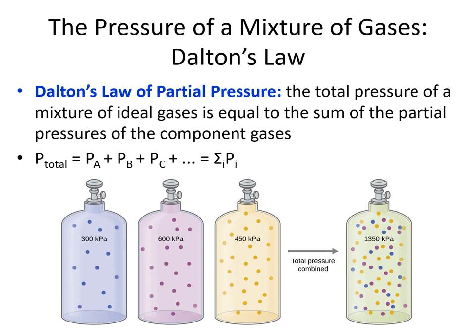So far we've been talking about just one gas at a time. When we have a mixture of gases, we can use Dalton's law of partial pressures, which tells us that the total pressure of a mixture of ideal gases equals the sum of the partial pressures of the component gases: P_total = P_A + P_B + P_C + ... For example, if we combined canisters of 300, 600, and 450 kilopascals, the total pressure would be 1350 kilopascals.